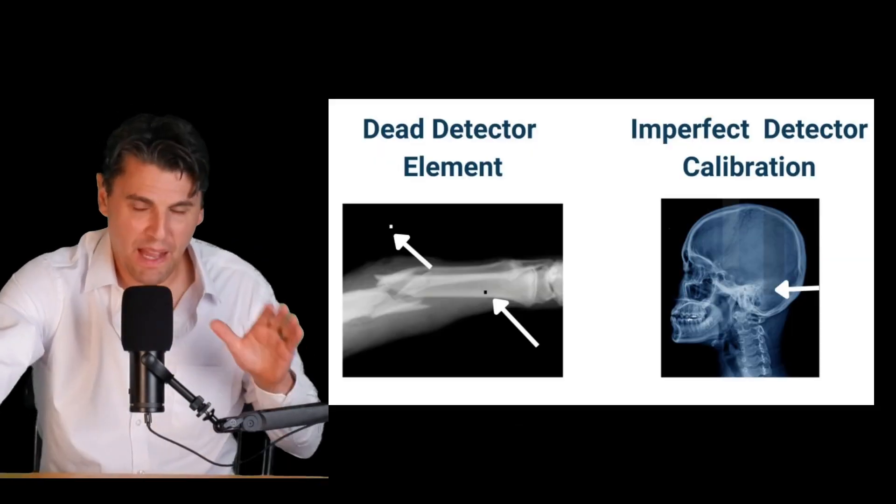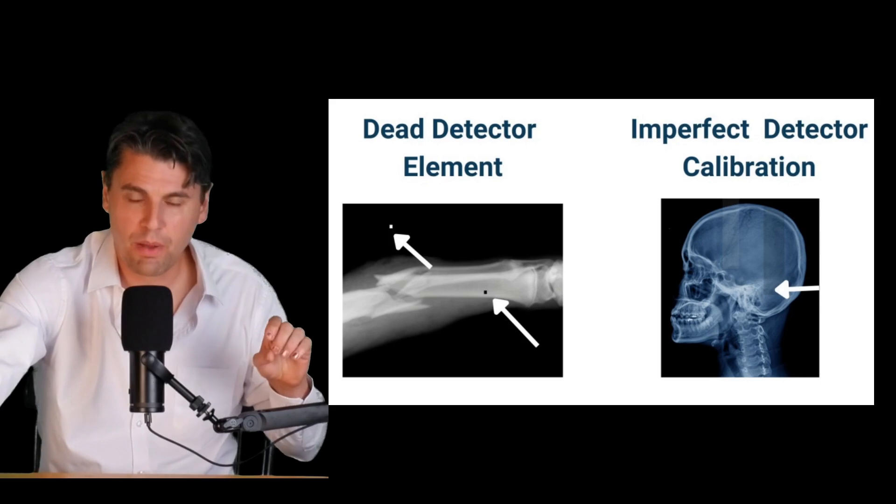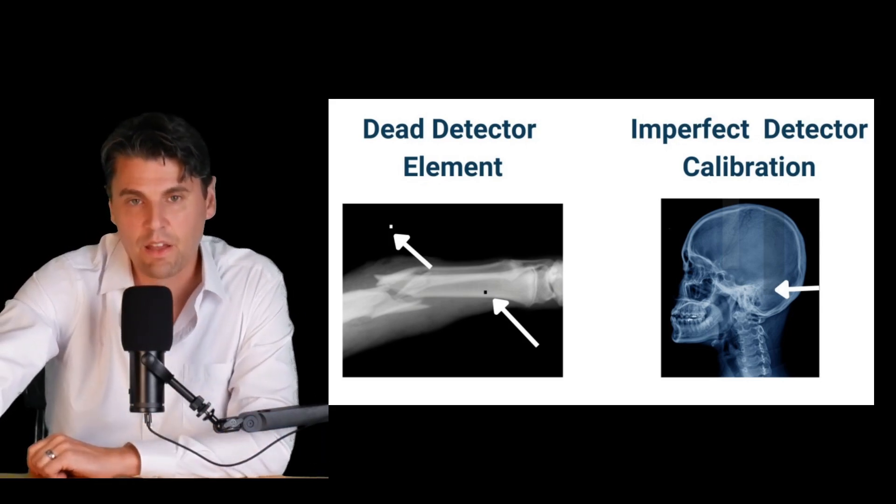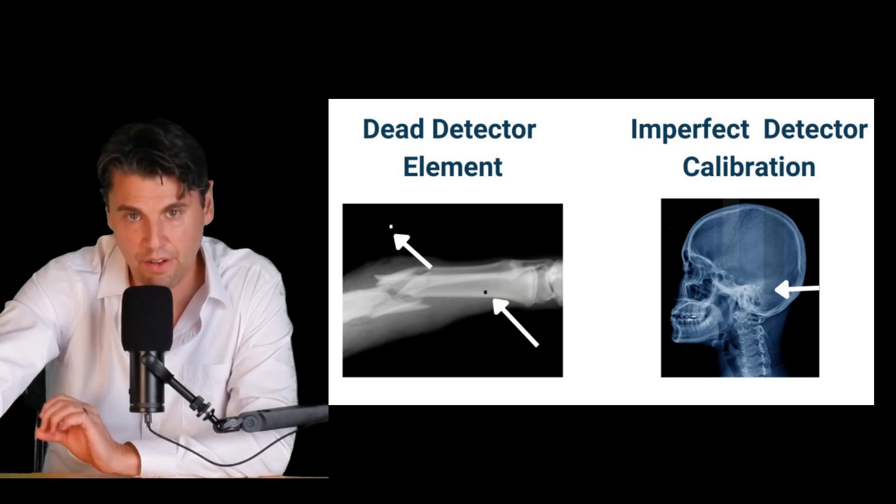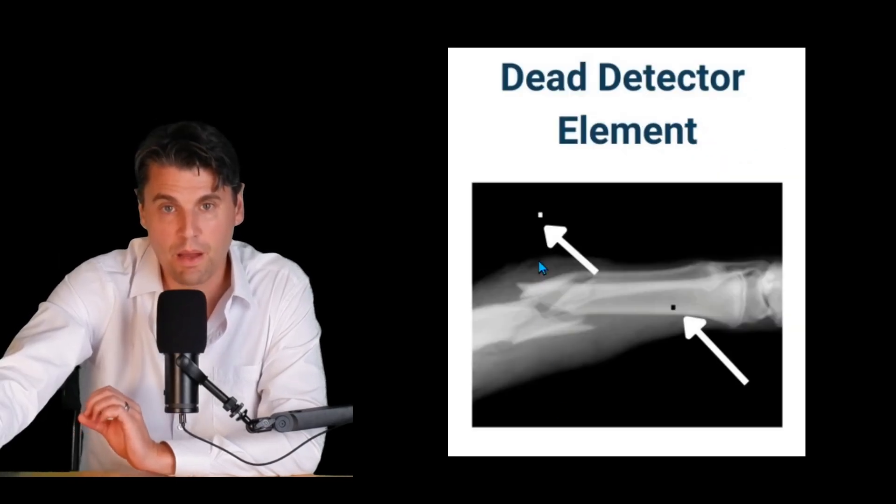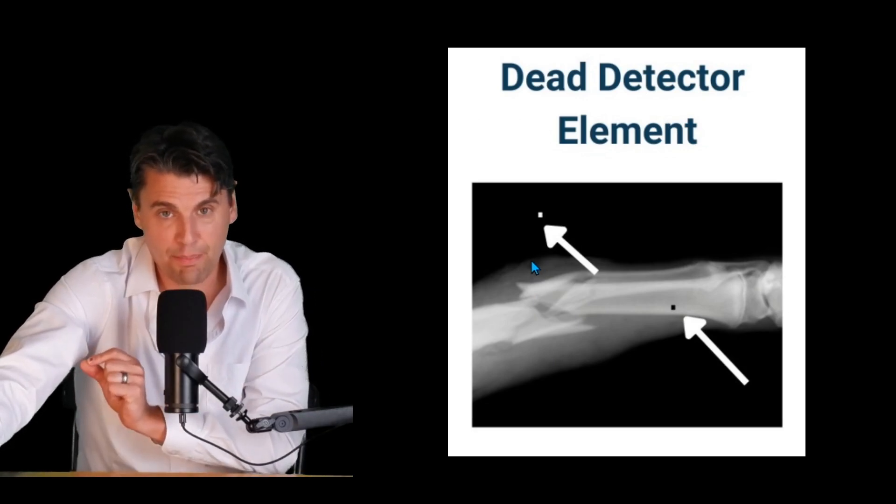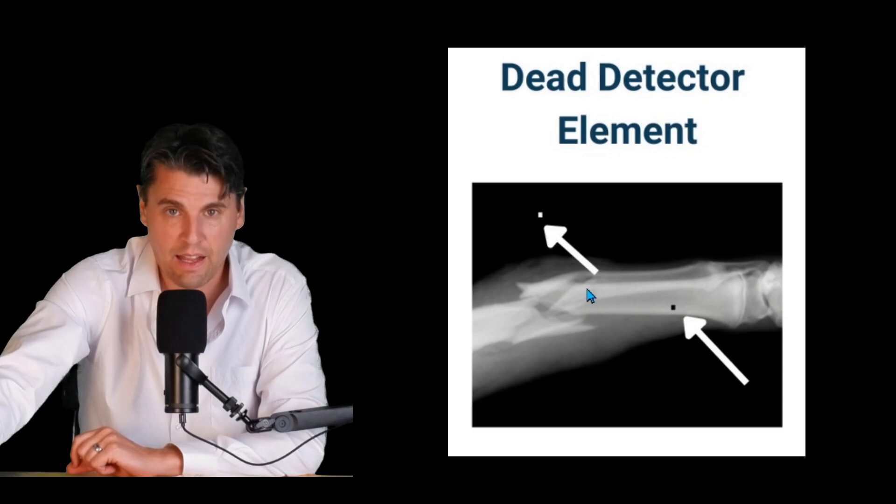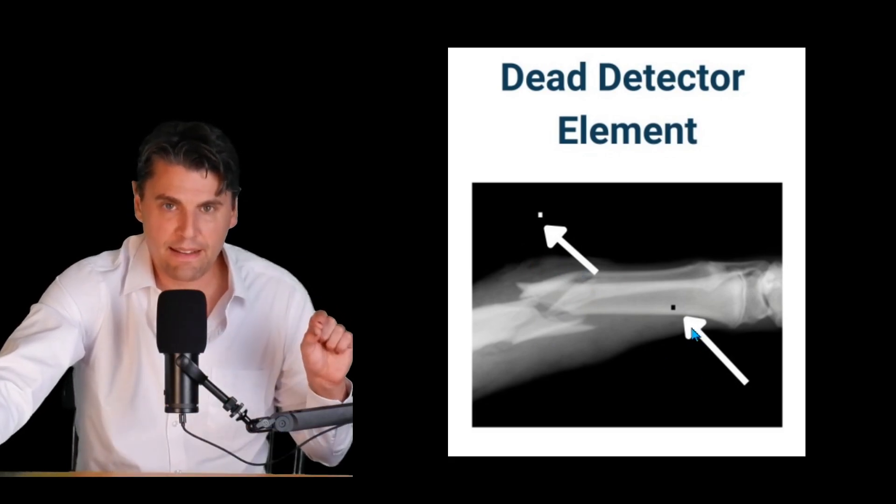From the perspective of the digital system there are corrections that are used and in the case that there's changes to the detector it's possible that there can be essentially bad pixels or bad detector elements that are not properly accounted for in the calibration. This can lead to kind of spurious bad detector elements.